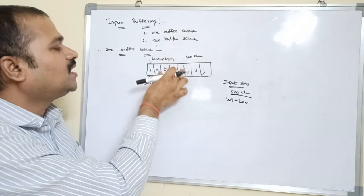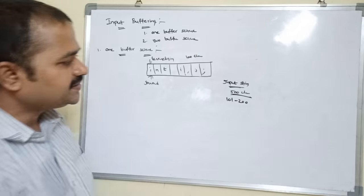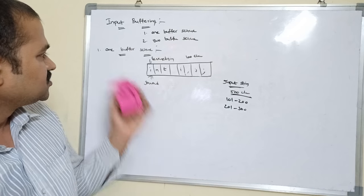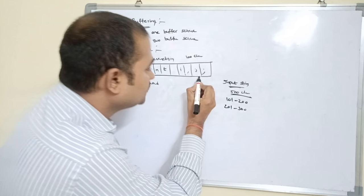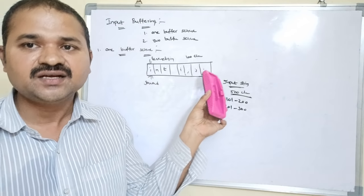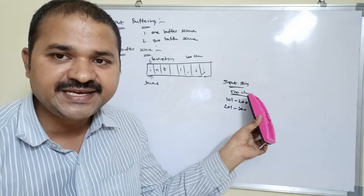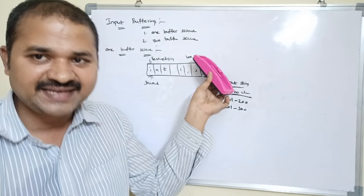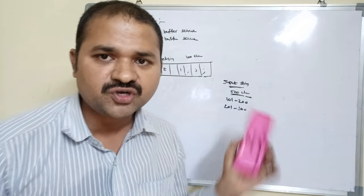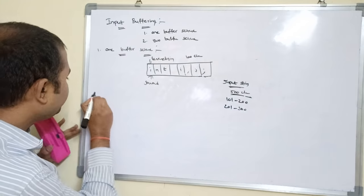The problem with the one buffer scheme is that if the input string size is larger than the capacity of the buffer, we have to overwrite the buffer to store the remaining input string. For example, if the input string size is 500 characters and the buffer size is 100 characters, the first 100 characters are read into the buffer. After processing those 100 characters, the next 100 characters (101 to 200) are stored by overwriting the previous 100 characters, then 201 to 300, and so on.